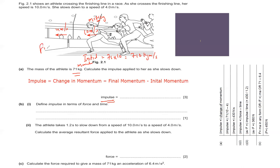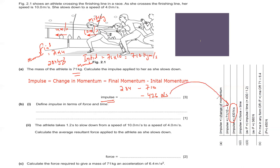The final momentum is 71 times 4 equals 284 kg·m/s. The impulse equals final minus initial: 284 minus 710 equals negative 426 Newton seconds. We get a negative value because she is slowing down. The marking scheme shows 430, which is a rounded value — in an exam, write 426.